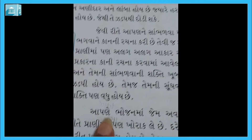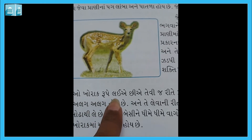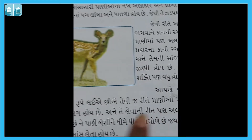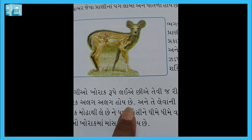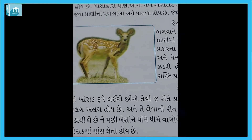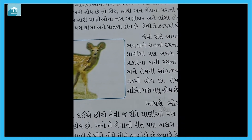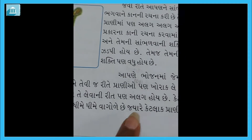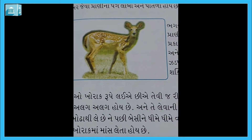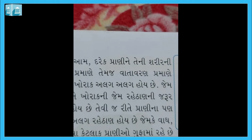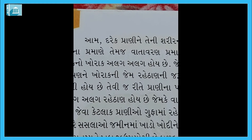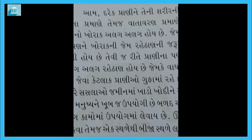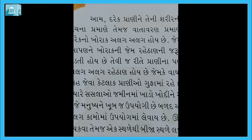પ્રાણીઓમાં સાંભળવાની અને સૂંઘવાની શક્તિ ખૂબ જ તીવ્ર હોય છે. આપણે ભોજનમાં જેમ અવનવી વાનીઓ ખોરાક રૂપે લઈએ છીએ, તેવી જ રીતે પ્રાણીઓ પણ ખોરાક લે છે. દરેક પ્રાણીનો ખોરાક અલગ-અલગ હોય છે અને તે ખોરાક લેવાની રીત પણ અલગ-અલગ હોય છે. આપણને જેમ રહેઠાણની જરૂર પડે, તેવી જ રીતે પ્રાણીઓને પણ અલગ-અલગ રહેઠાણ હોય છે - જેમ કે વાઘ-સિંહ ગુફામાં રહે છે.